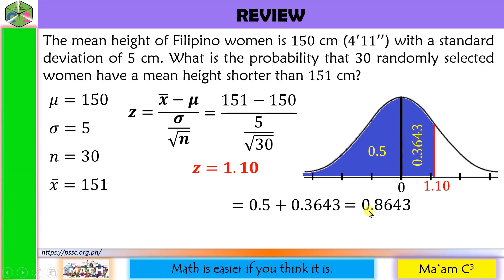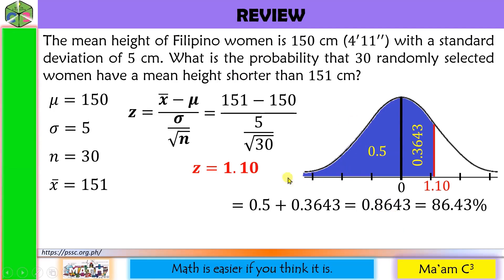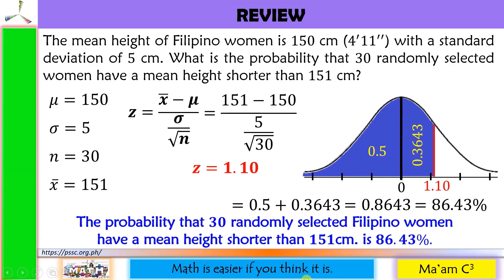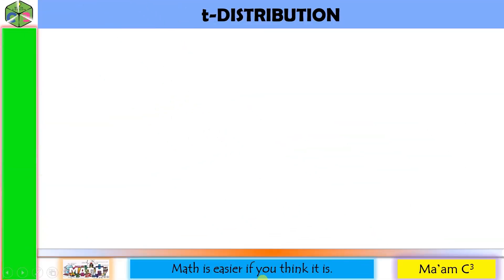Adding 0.5 and 0.3643 gives us 0.8643. Moving two decimal places to the right, this is 86.43%. Therefore, the probability that 30 randomly selected Filipino women have a mean height shorter than 151 centimeters is 86.43%.